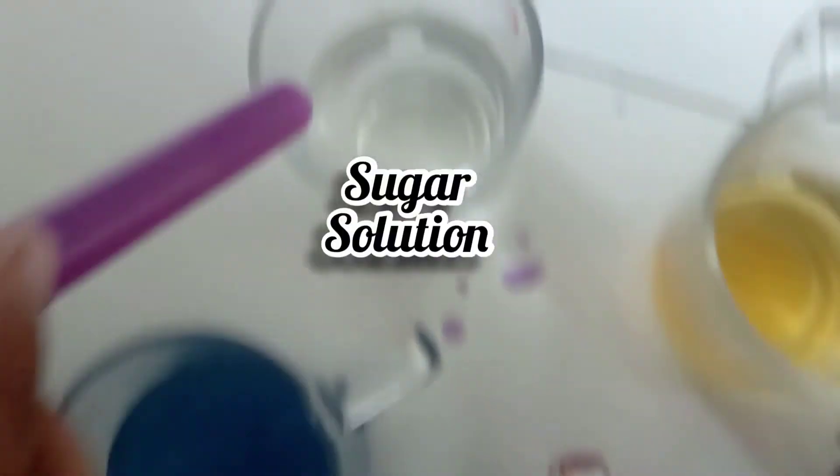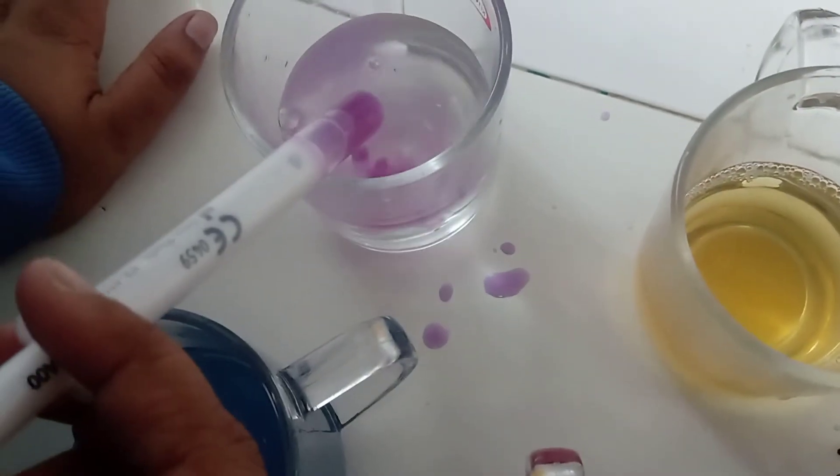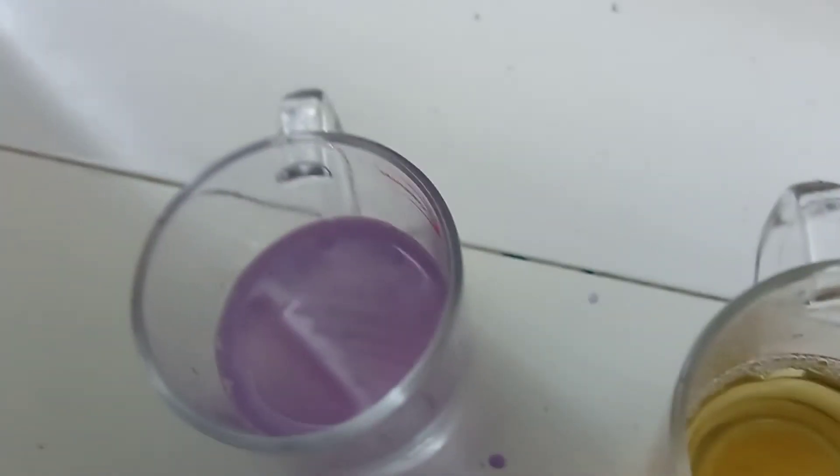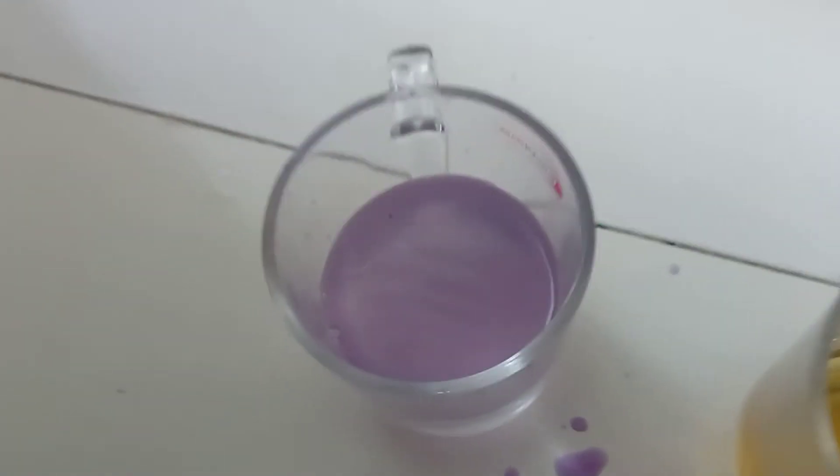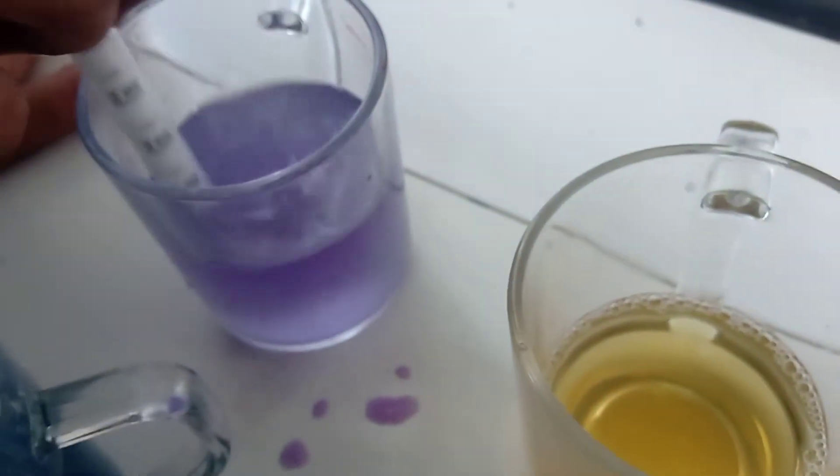This is the sugar water, sugar solution we are putting in. And now see, the light purple color is becoming light purple. See, now I'm mixing it and see the new color. Now it became dark blue.